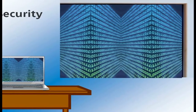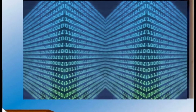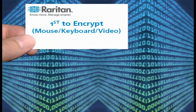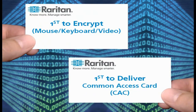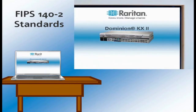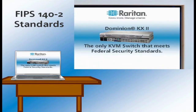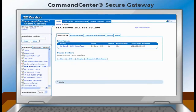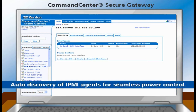Raritan takes data security very seriously. We were the first to encrypt the mouse, keyboard, and video streams, and the first to deliver common access card support for authentication. Raritan is currently the only KVM company to have achieved the US and Canadian government's highest security certifications for data encryption, which are the FIPS 140-2 standards. Command Center Secure Gateway automatically discovers IPMI agents for seamless power on, off, recycle, and graceful shutdown of servers.